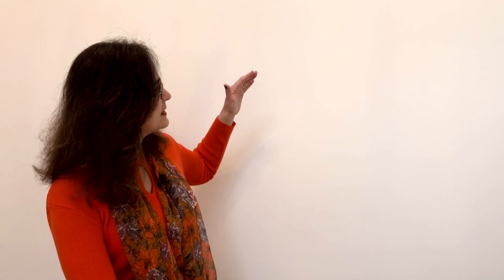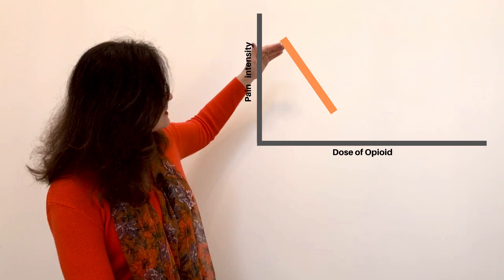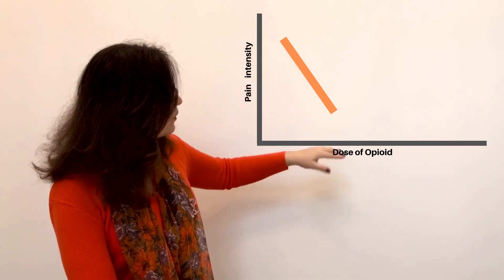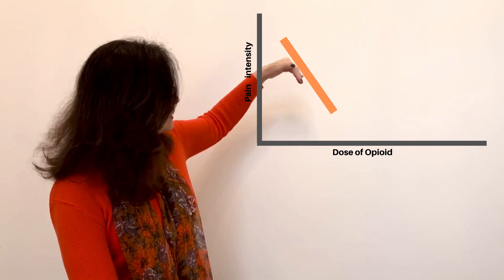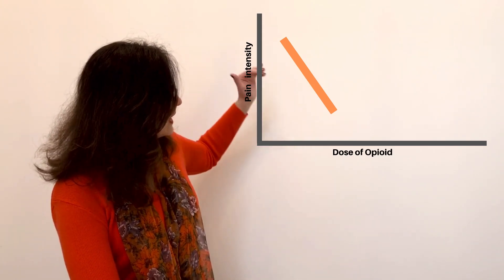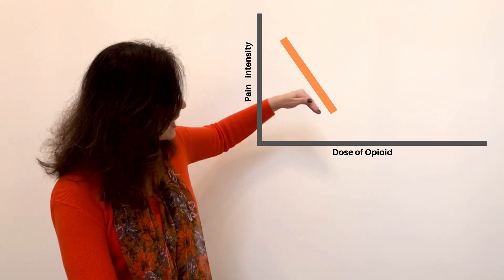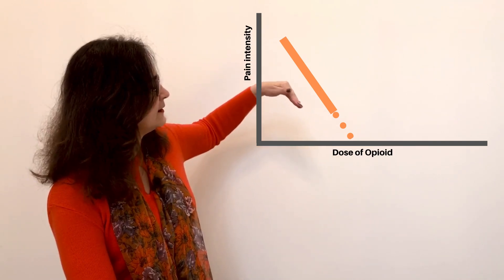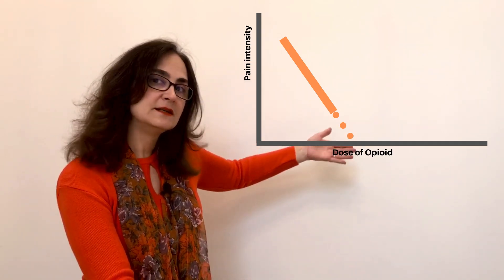What happens is in the beginning when the person started using opioids, the dose was small and the opioid really helped the pain, reducing the pain intensity as the dose was going up. And the prescriber, the physician or the nurse practitioner, continued prescribing higher doses thinking that maybe they will go to zero. But this didn't happen.